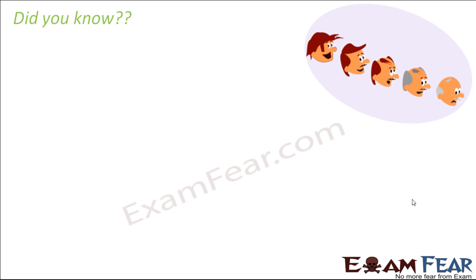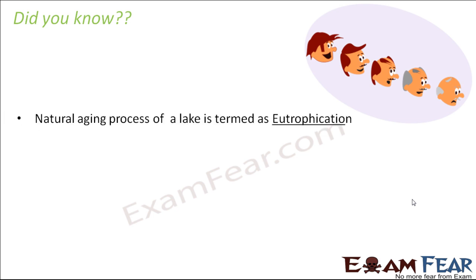Now you might wonder how come we suddenly started talking about the aging process of a lake. That's because when we discuss water pollution, this process of aging of lakes also plays a very important role. So this natural aging process of a lake is known as eutrophication — that is the terminology associated with the aging process of a lake.